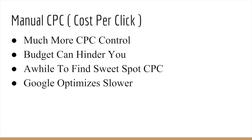The problem I have with manual CPC is that the budget can hinder you. For example, the bid that you set as your CPC may be too low for you to spend your daily budget, so you're having trouble spending your entire budget and not bringing as much traffic as you could be getting. It's going to take you a little bit longer to find your sweet spot when it comes to your CPC. And with manual CPC, Google will optimize but at a much slower pace, because most of the time as a beginner, you're not going to set your bid correctly from the get-go, so you're going to have to make a lot of adjustments.